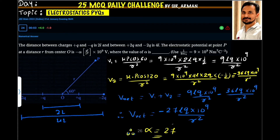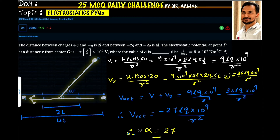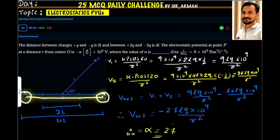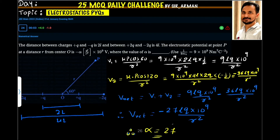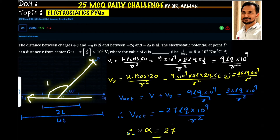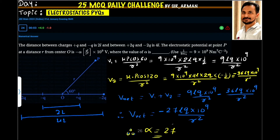For the other dipole, we have +2Q and -2Q, and therefore the dipole moment is pointing in this direction. The electric potential at point P due to this dipole — with -2Q and +2Q — again follows the same equation: Kp cos theta by R squared, but here the angle is 120 degrees, because the dipole moment points from negative to positive in this direction, and the point is located in the opposite direction. This angle is 120 because it is 180 minus 60.